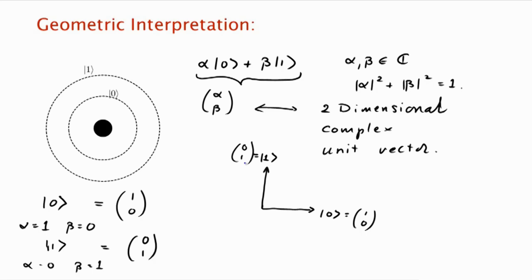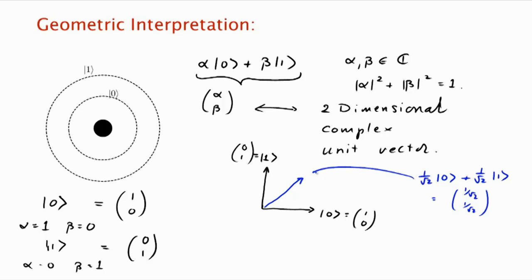Let's draw a few other vectors. For example, the state 1/√2 |0⟩ + 1/√2 |1⟩ corresponds in usual vector notation to (1/√2, 1/√2), and it sits at 45 degrees. How about 1/2 |0⟩ + √3/2 |1⟩? This makes a 60-degree angle. All of these vectors are required to sit on the unit circle.